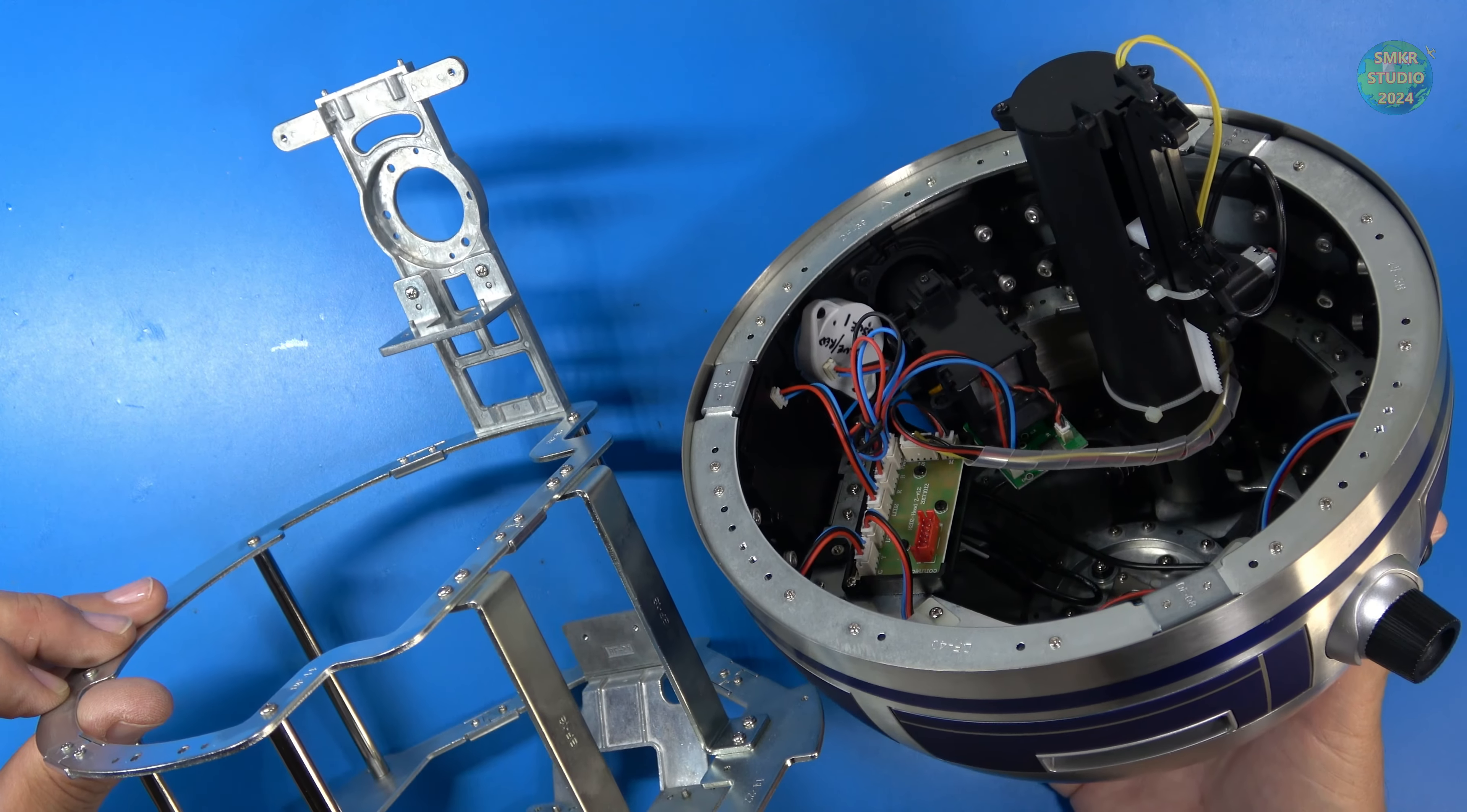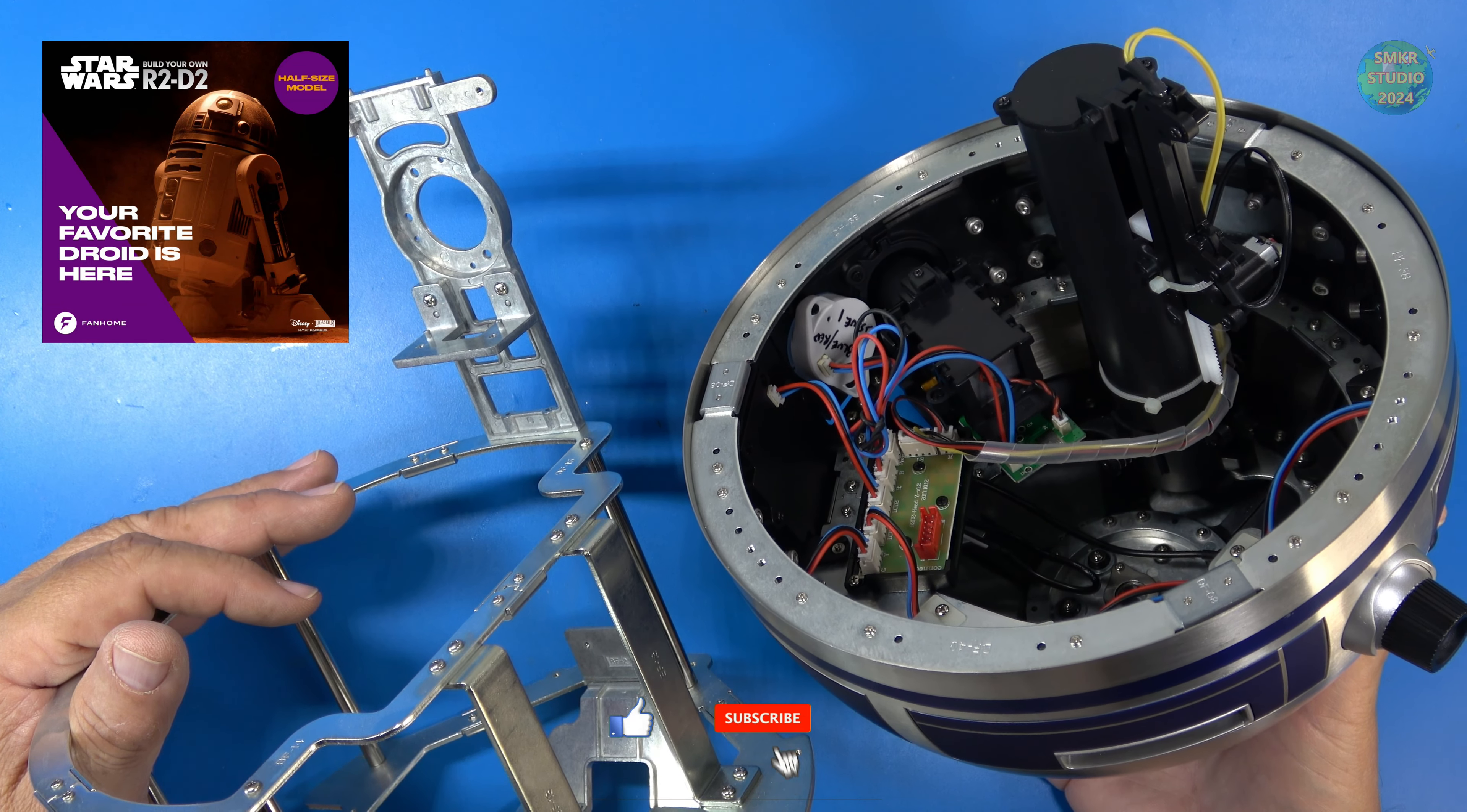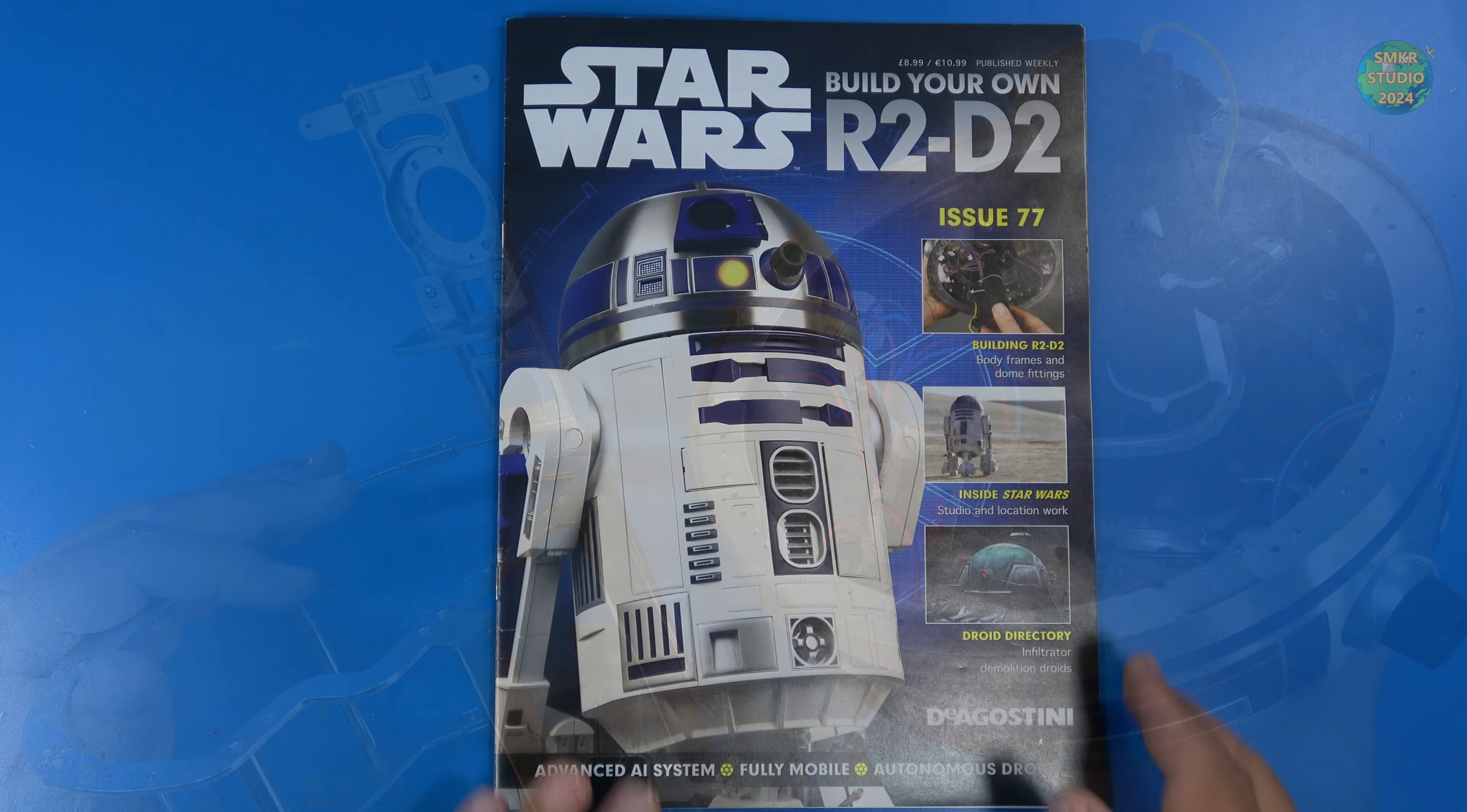There you go, that completes stage 77. I had a blast building this. We got that part installed on the lower frames there and all the wiring neatened up in the dome and the lightsaber ejector installed. That's fantastic. If you like my content please subscribe to my channel and smash the like button. Let's look at the articles in the magazine. Take care everybody.